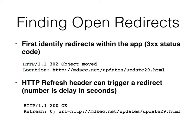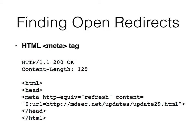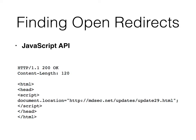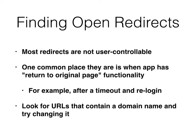You can find open redirects by finding the 302 redirects and other 300 status codes, and look at them to see if they're using user data to determine where they go. A meta tag is another way to do it — you put a meta tag in your HTML with zero seconds delay, so it'll immediately redirect to another page. You can also do it with JavaScript by setting document.location to some URL. Most redirects are not user controllable.